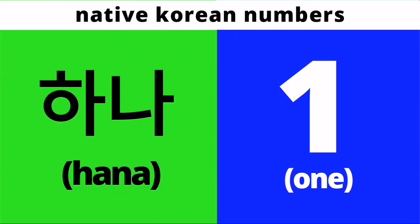Number 1 is Hana in native Korean numbers. Hana is number 1. This is composed of two syllables. The first syllable is Ha, the second syllable is Na. Pronounce it with me: Hana.